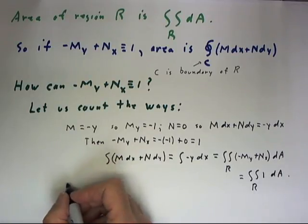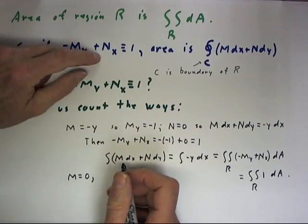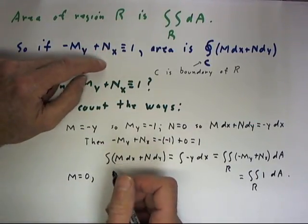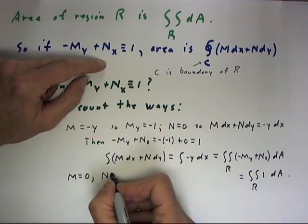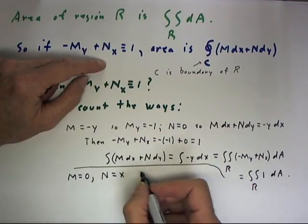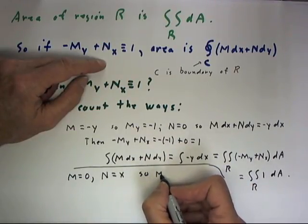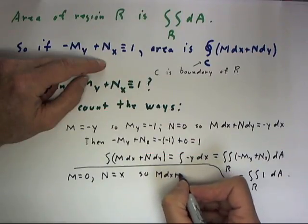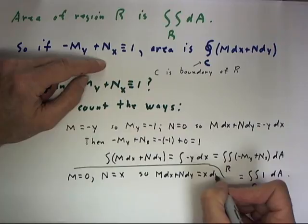Another way is to let M equals 0 and N_x equal to 1. That occurs if N is equal to X, so that Mdx + Ndy equals Xdy.